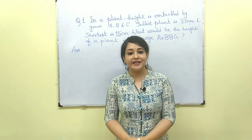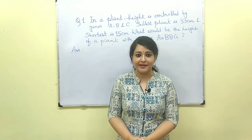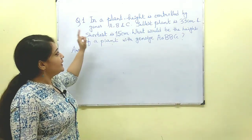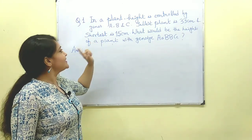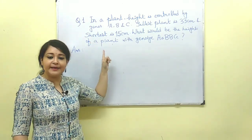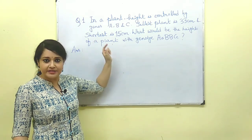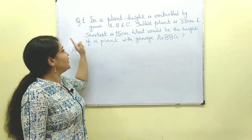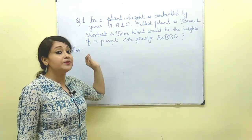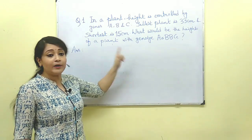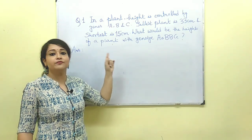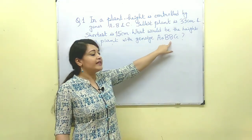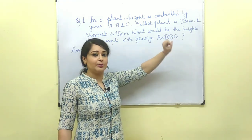Let us begin with question number one, which is on the board. In a plant, the height is controlled by genes A, B, and C (capital A, capital B, and capital C). The tallest plant is 33 centimeters whereas the shortest plant is 15 centimeters. What would be the height of a plant with genotype AaBBCc?